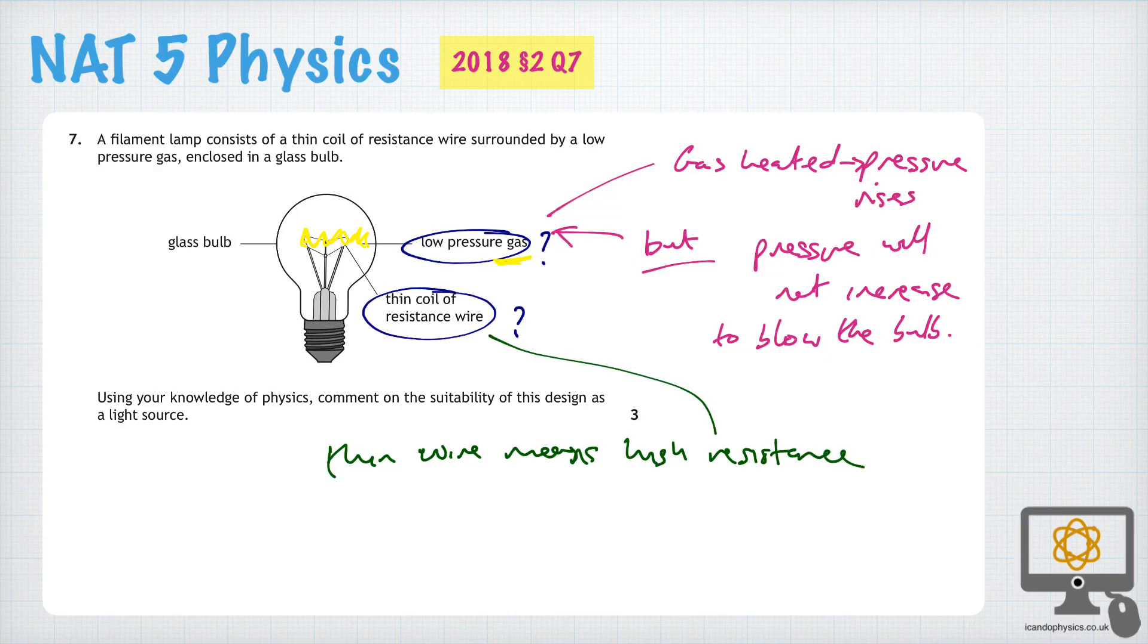And high resistance means that it will heat up. And when it heats up, it will also emit light.